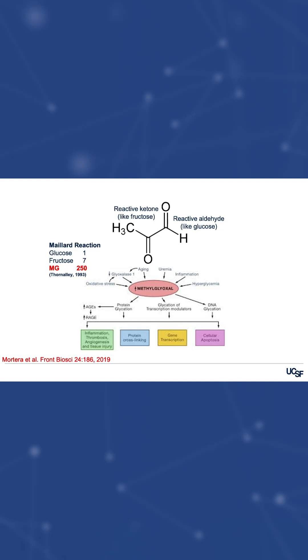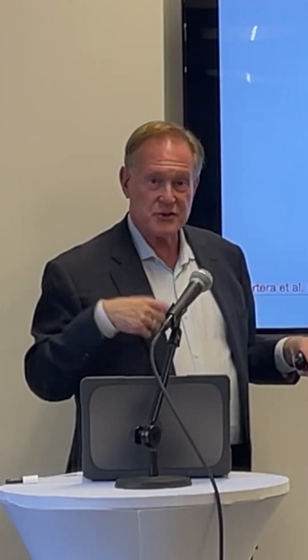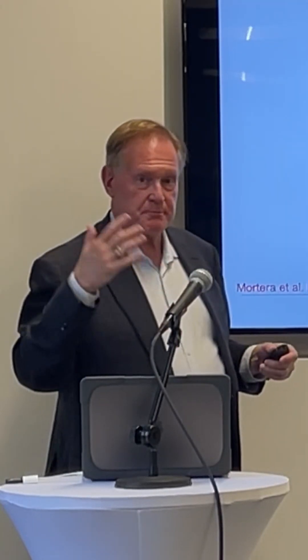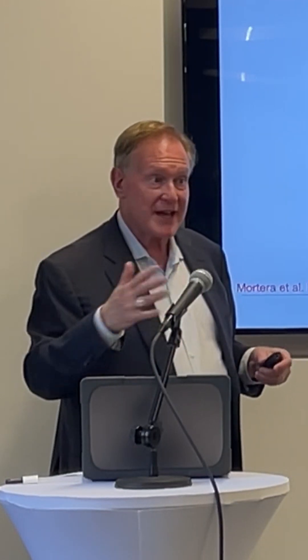A compound made from an intermediary metabolite of fructose called methylglyoxal is the breakdown product of dihydroxyacetone phosphate, and it is an aldehyde. Methylglyoxal is a bad guy because it is binding to proteins, whether you like it or not.